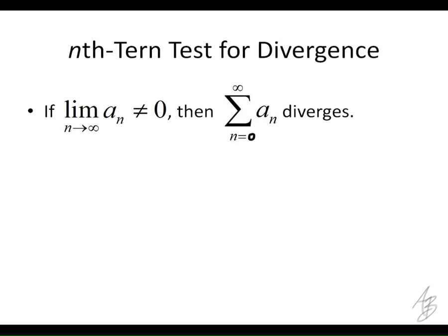The only way for a series to possibly converge is if the terms get really, really small — really close to 0. So if they don't get close to 0, it diverges. But that doesn't mean that if the limit of the terms does approach 0, the series converges. Understand that the converse of this theorem is not necessarily true.